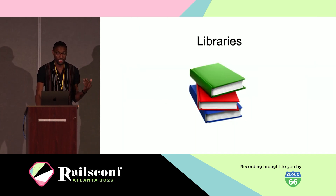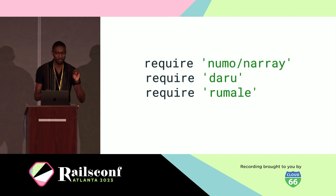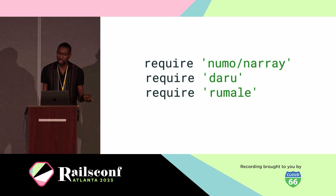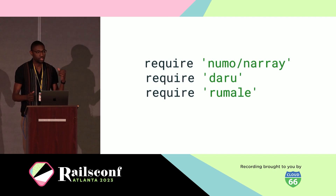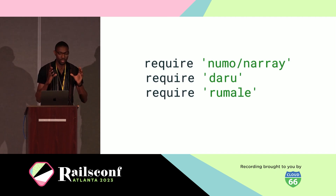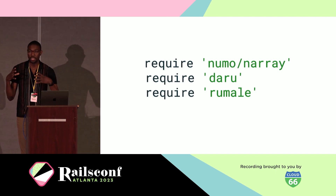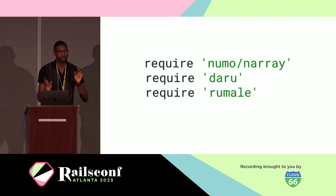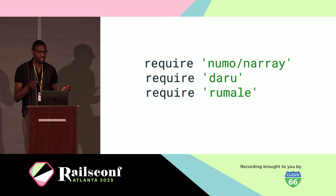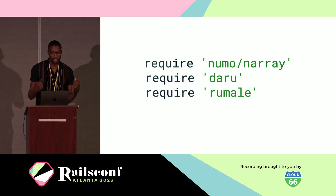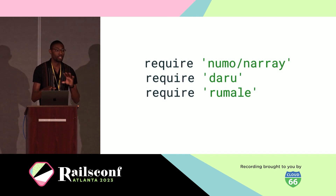I want to talk a little bit about libraries. For this machine learning project I'm using three libraries: one's called Numo, one's called Daru, and one's called Rumale. Numo is a numerical n-dimensional array class for fast data processing and easy manipulation. Daru is a gem that gives you a data structure called a data frame, which allows you to do analysis, manipulation, and visualization of data. Numo and Daru have synonymous Python libraries called NumPy and Pandas — so those are replacements for those. And then Rumale is a gem that allows you to use different machine learning algorithms.